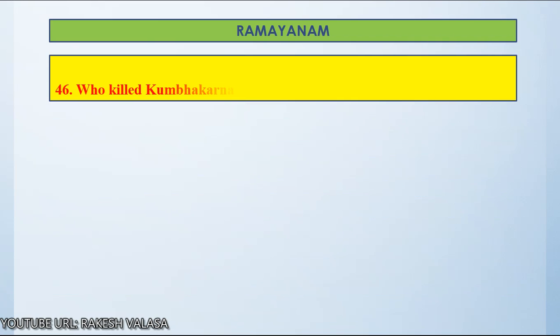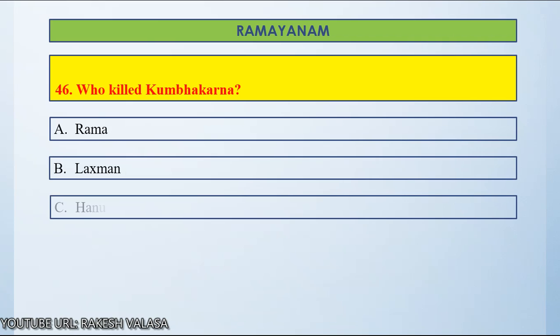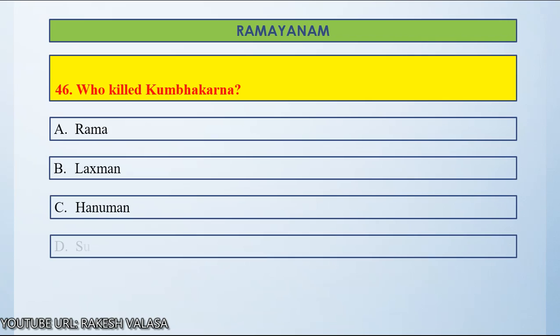Question number 46: Who killed Kumbhakarna? Option A, Rama. Option B, Lakshman. Option C, Hanuman. Option D, Sugriva. Let us count and start. If you know the answer, please post in the comment section.